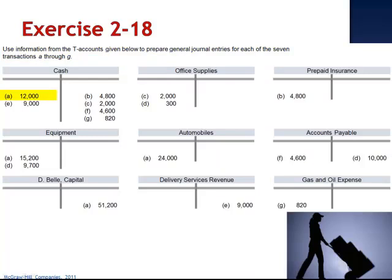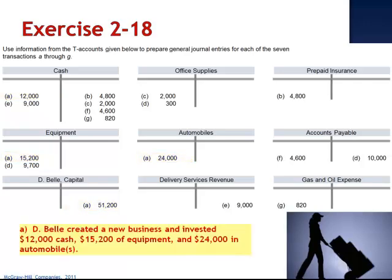Letter A includes a debit to cash for $12,000, a debit to equipment for $15,200, a debit to automobiles for $24,000, and a credit to Bell's capital account for $51,200. We have three assets increasing and a credit to the owner's capital account, indicating an investment by the owner. Bell created a new business and invested $12,000 cash, $15,200 of equipment, and $24,000 in automobiles.